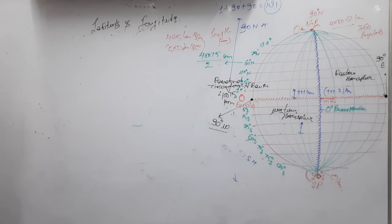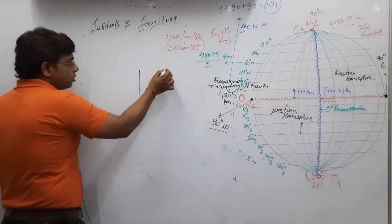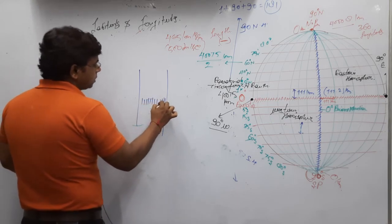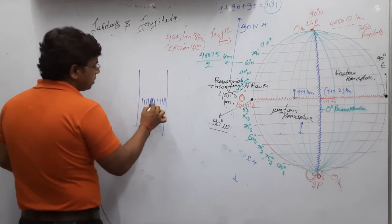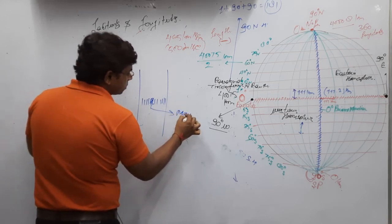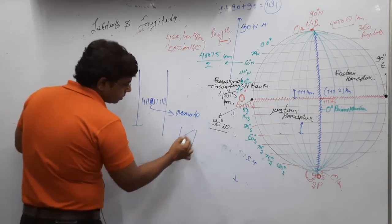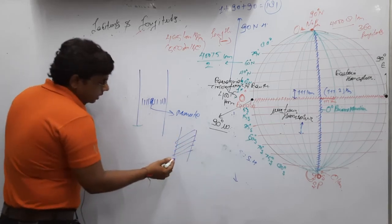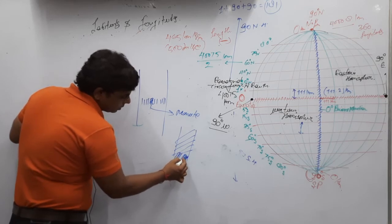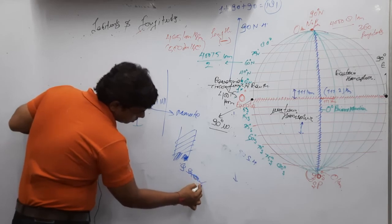The distance between two longitudes is also divided into 60 equal parts, each known as a minute, and that minute is again divided into 60 equal parts, each known as a second — giving longitude measurements in degrees, minutes, and seconds.